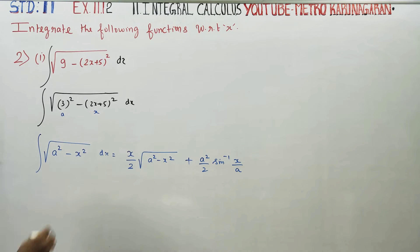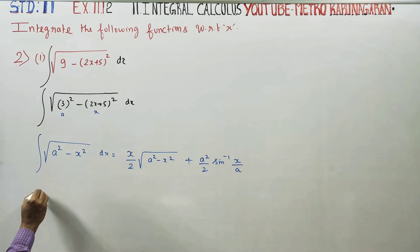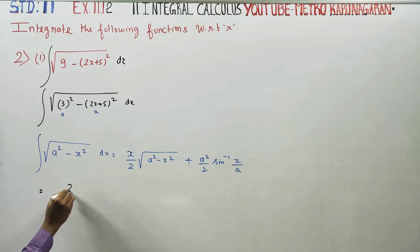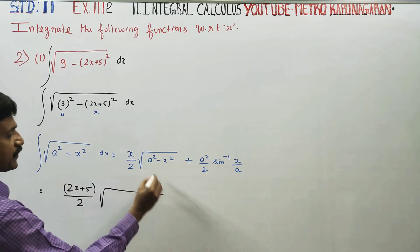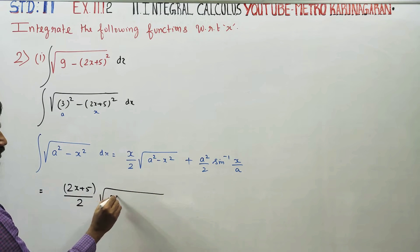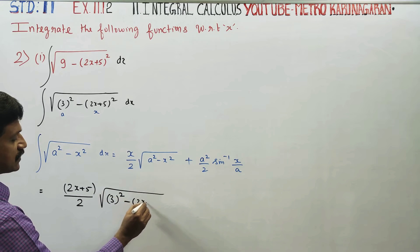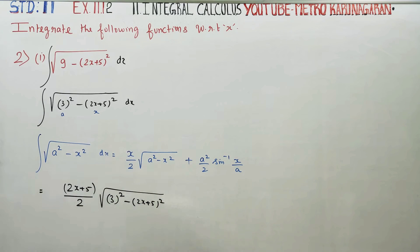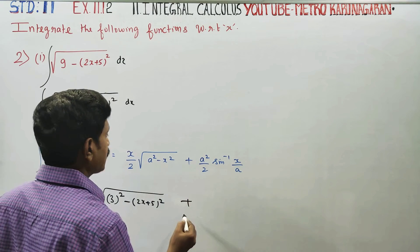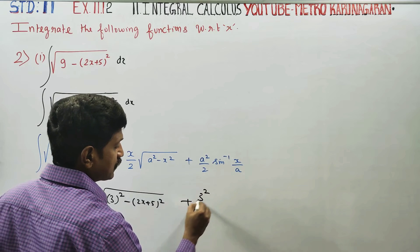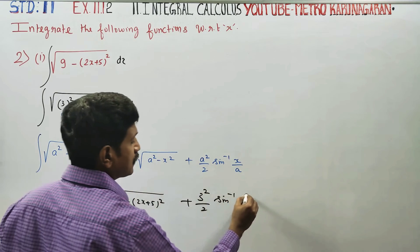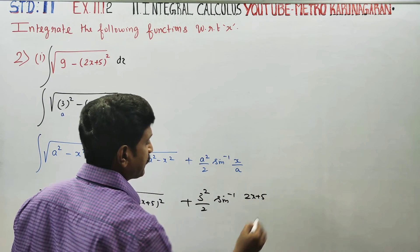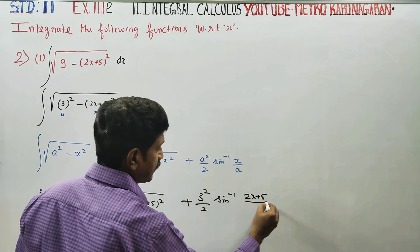Here we identify a and x, so we apply the formula: x/2 · (2x+5)/2 · √(3² - (2x+5)²) plus a²/2, which is 3²/2 · sin⁻¹ of (x/a), where a equals 3, substituting accordingly.